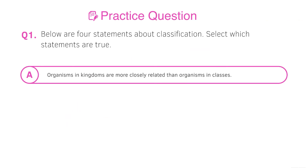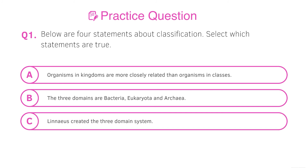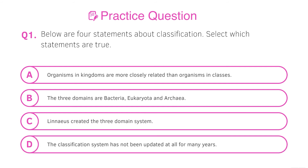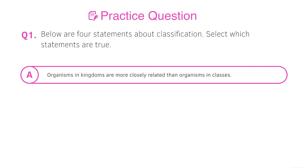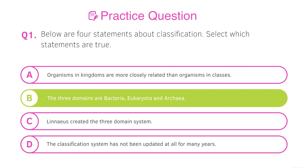Let's go through some practice questions. Pause the video, have a go, and select which statements are true. A: organisms in kingdoms are more closely related than organisms in classes. B: the three domains are bacteria, eukaryota, and archaea. C: Linnaeus created the three domain system. D: the classification system has not been updated at all for many years. Answers: A is false — the lower down the classification the more closely related the organisms are, and classes are lower than kingdoms. B is true — those are the three domains. C is false — Carl Woese created this system. D is false — it constantly changes with new analytical techniques such as genetic sequencing.